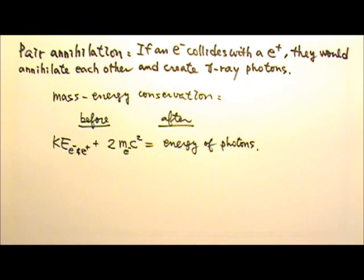Because of pair annihilation and the fact that there are a lot of electrons in nature, positrons usually do not survive very long before getting annihilated.